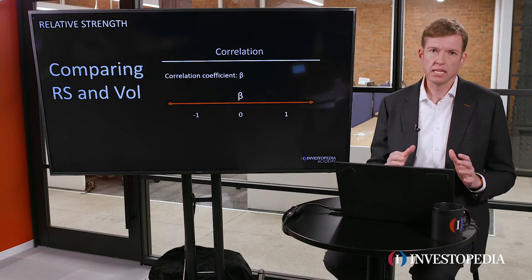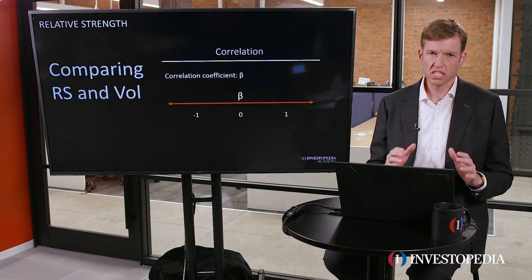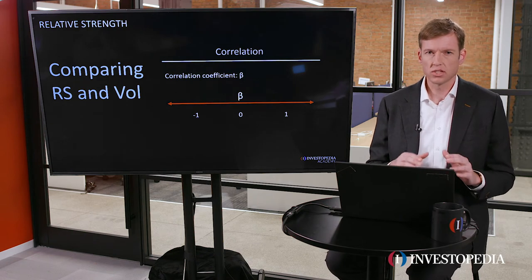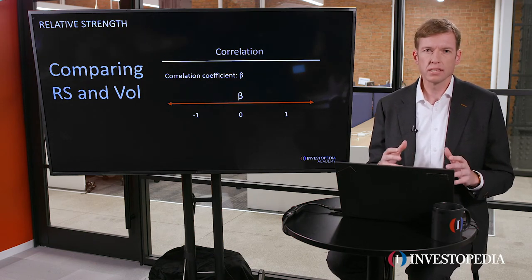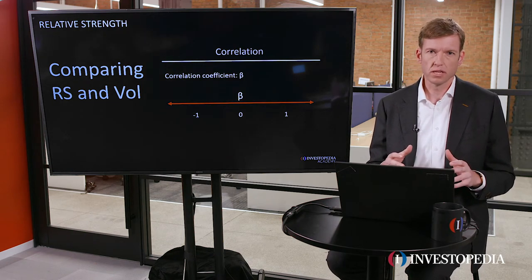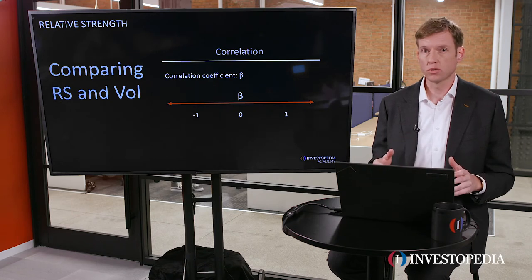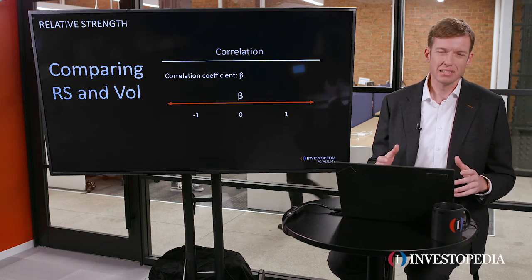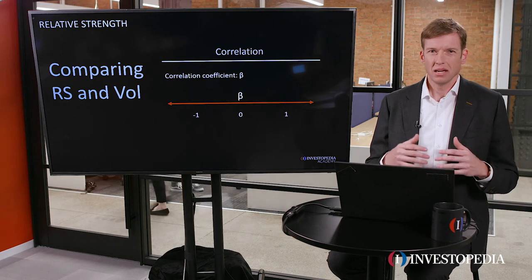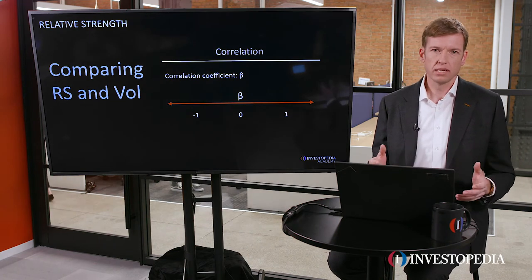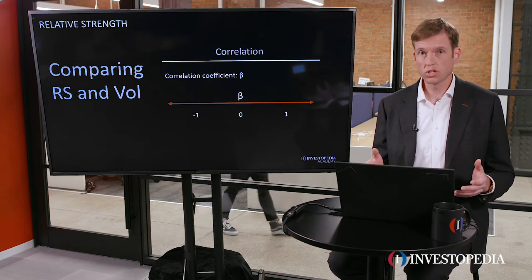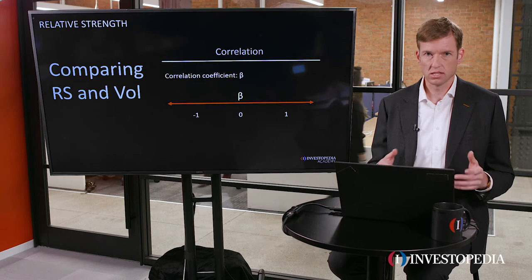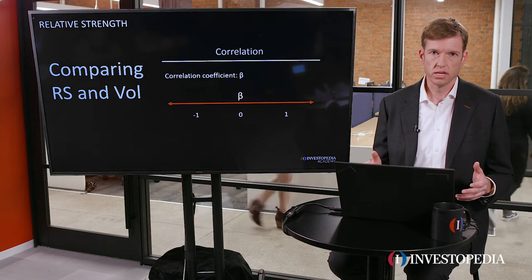Beta looks at the company and its price performance and tries to figure out why the company is performing the way that it is, or why the price performance of that stock is performing the way that it is. You could think about beta as how correlated the stock is versus some kind of a benchmark, and usually that means it's the stock versus the S&P 500.